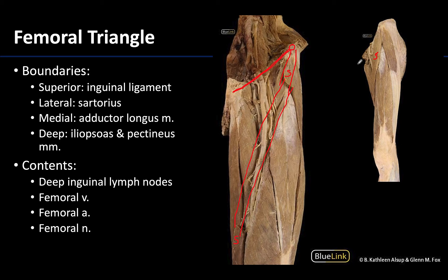The medial boundary of the femoral triangle is the adductor longus, which is this fan-shaped muscle right here. Filling out the rest of the triangle, you can see the adductor longus, which is in the adductor or medial compartment. So right in this region here is the femoral triangle.